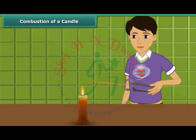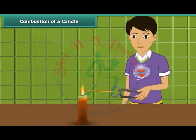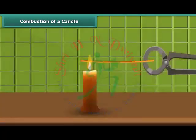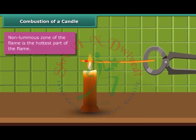Rohan is holding a thin long copper wire inside the flame with the help of a pair of tongs. The portion of the copper wire just outside the flame is getting red hot. This indicates that the non-luminous zone of the flame is the hottest part of the flame.